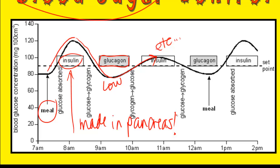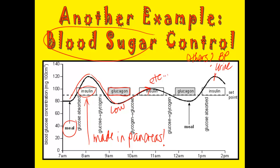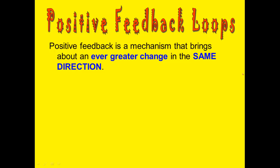The pancreas helps to control blood sugar levels in the body. Other examples of things we control via homeostasis include blood pressure, urine formation, and metabolism. There are lots of examples we're going to be talking about throughout the year, and those are all negative feedback cycles.